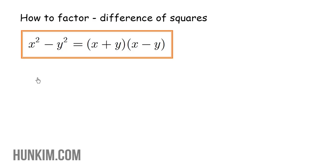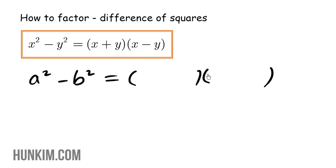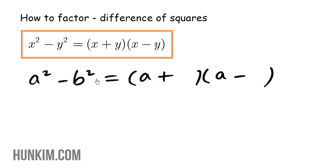For example, if we have the question: factor a squared minus b squared. Looking at the pattern, you write your two brackets. What times what is a squared? Take the square root of a squared, which is a. Then follow this pattern — write the plus sign and the minus sign without thinking too much. Then ask: what times what becomes b squared? The square root of b squared is b.